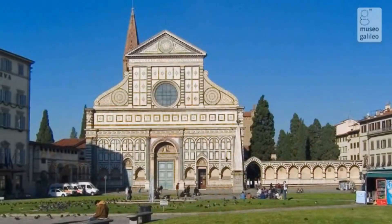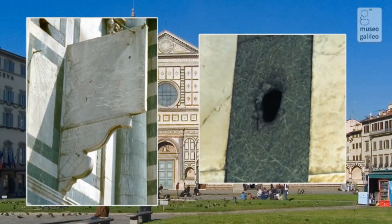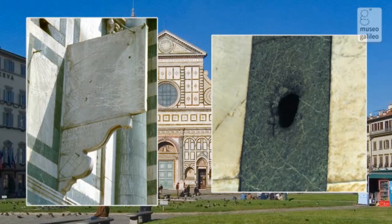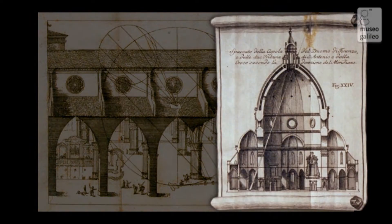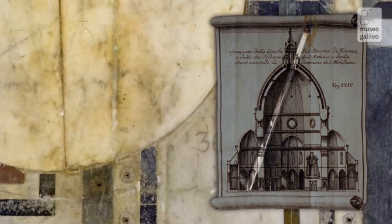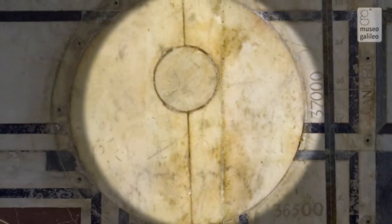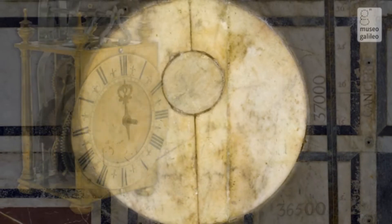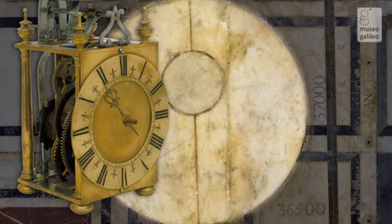New monumental sundials were installed in the main cathedrals. Small holes were made in the facade, through the roof, or in the dome, to project a sunbeam on a meridian line drawn on the floor. The light ray fell at the center of the line at noon exactly. This made it possible to reset mechanical clocks, whose precision was no match for astronomical clocks.